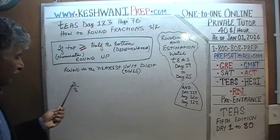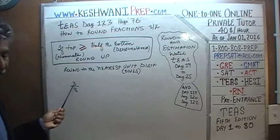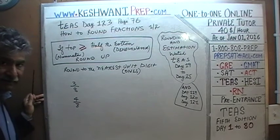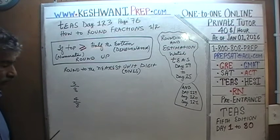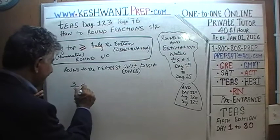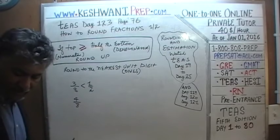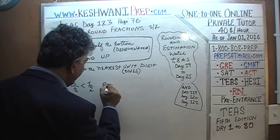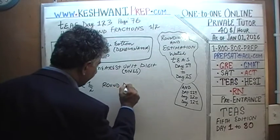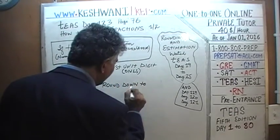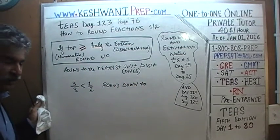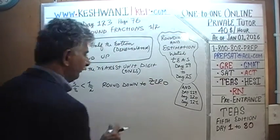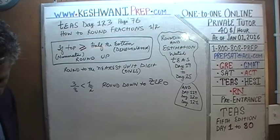Is the top greater than or equal to half the bottom? The answer is no, because half of the bottom would be 4. Four-eighths equals one-half. Since 3/8 is less than half, we have to round it down. The nearest unit digit to 3/8 is 0.